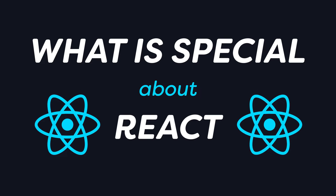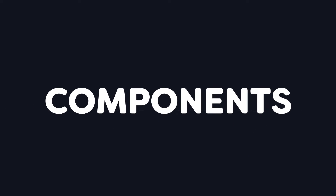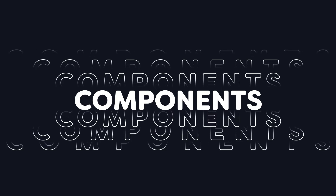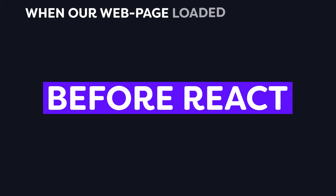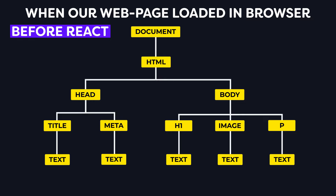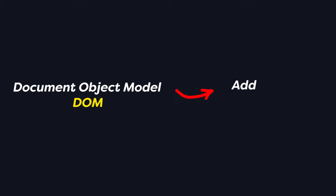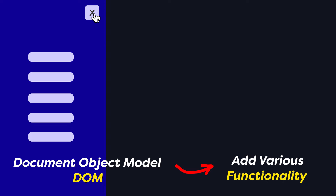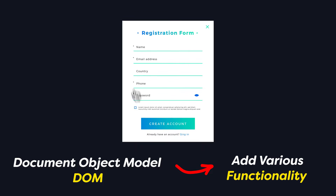The first reason for React's dominance is its component-based approach. Before React was created, when our web page loaded in a browser, our browser created a tree-like structure with our HTML code. This tree structure is called the Document Object Model, or DOM. By using this DOM in JavaScript, we can add various functionality to our application, like hiding the sidebar on button click, handling form inputs, etc.